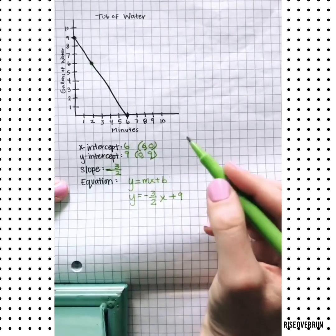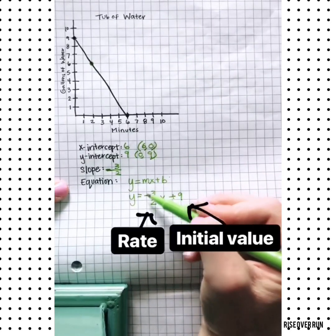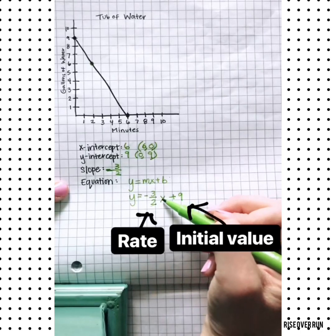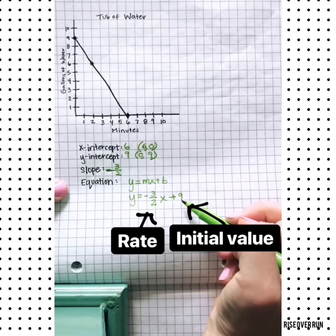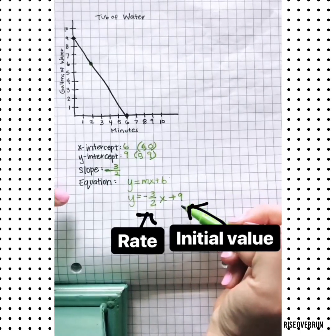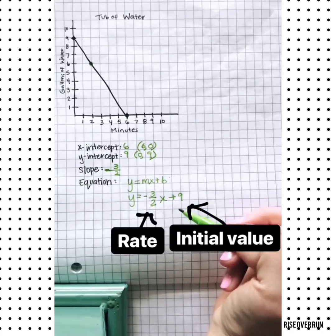This is how most linear functions will be set up. You have a rate that multiplies the x, and then you have an initial value. If you can remember that format, you can set up most equations for linear functions.